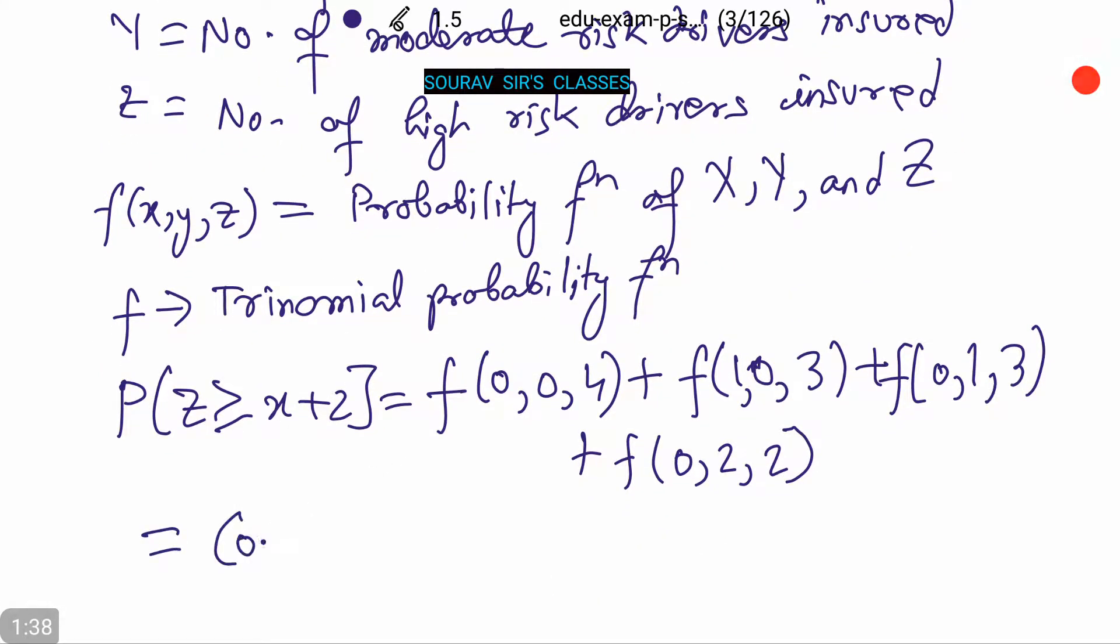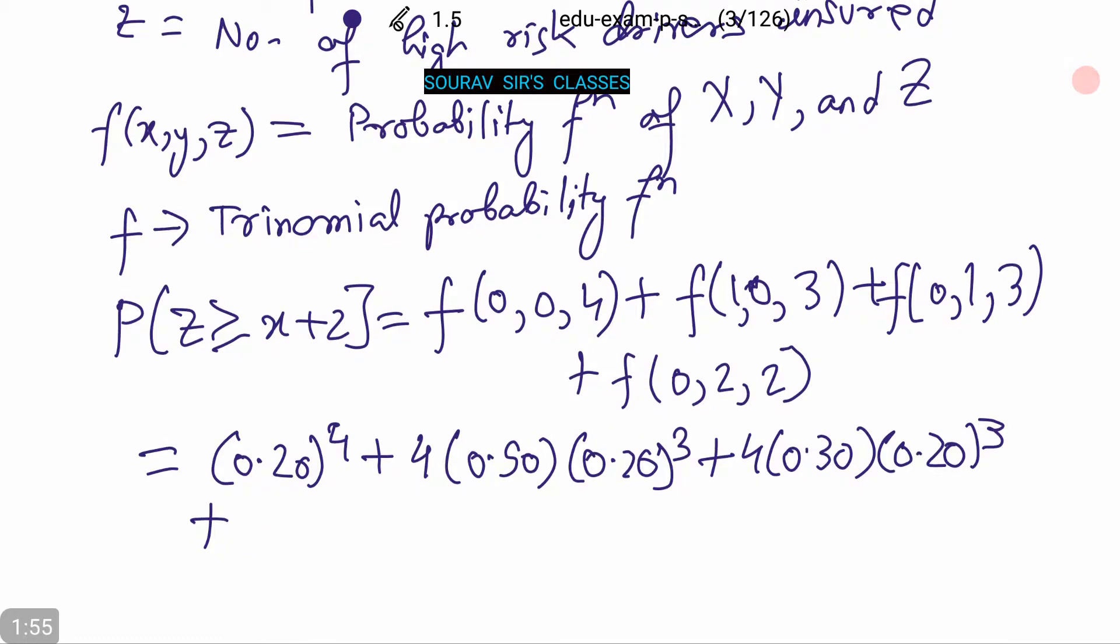Now putting in the values, we have 0.20 to the power 4 plus 4 times 0.50 times 0.20 cubed, plus 4 times 0.30 times 0.20 cubed, plus 4 factorial by 2 factorial times 0.20 squared times 0.20 squared.